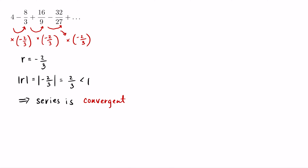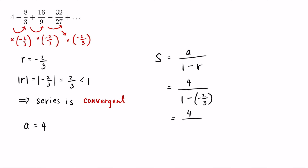And if we have a convergent geometric series, then we can find its sum. The sum is given by S equals the first term A over 1 minus the common ratio. In this case, A is equal to 4, so the sum equals 4 divided by 1 minus negative 2 thirds. That is 4 over 5 thirds, which is the same as 4 times 3 over 5, equal to 12 over 5. So the sum of this series is 12 over 5.